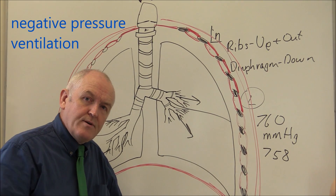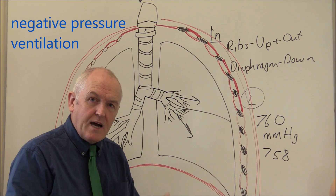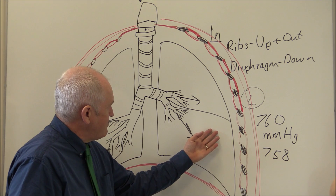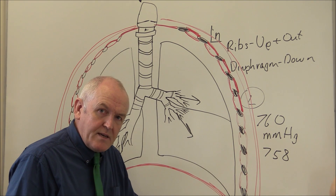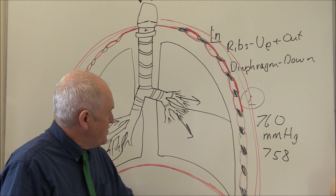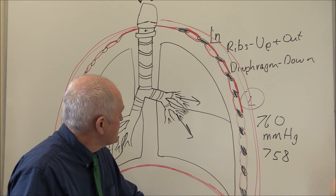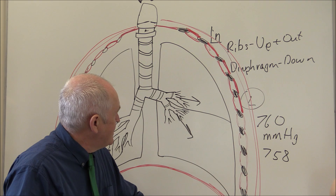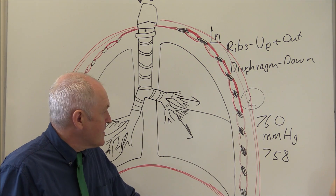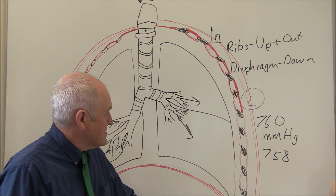If you go out for a jog and breathe more heavily, the diaphragm moves down further, so the negative pressures generated can be significantly greater. When greater negative pressures are generated, air comes into the lungs much more quickly, allowing us to breathe more rapidly during periods of exercise.